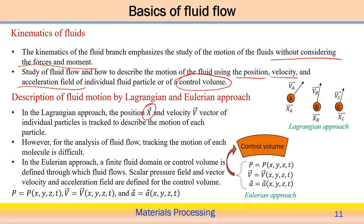In the Lagrangian approach, the position vector of the particle is x-bar, and the velocity of the individual particle is represented by vector V. The individual particle is tracked to describe the motion of each particle. However, in fluid analysis it can be very difficult to track the motion and deformation of each particle. Therefore, there is another approach — the Eulerian approach — which works over a finite control volume domain. Within the control volume, we define the flow field, tracking velocity, scalar pressure field, and vector velocity and acceleration fields.